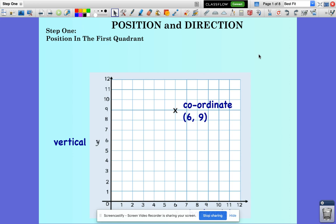Hello everybody. This week we're going to start a new topic in maths called position and direction. It's all about looking at a graph. Step one is position in the first quadrant. We call this the first quadrant. This is because we can actually split the graph into four separate parts, but don't worry about that too much. We're just going to look at this, the first quadrant.